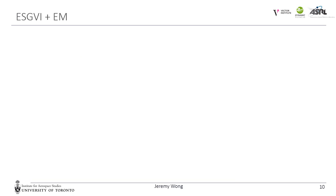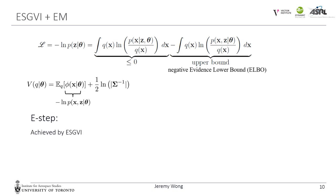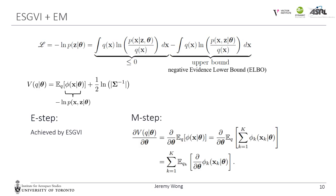Now I will talk about how we can combine ESGVI and EM to do parameter learning. We start by applying the usual EM decomposition to our loss function, where Q is the Gaussian distribution approximating our posterior. The second term is the upper bound, also known as the negative evidence lower bound, or ELBO. In both the E-step and the M-step, we optimize the negative ELBO, which we can rewrite as the following loss functional. This is the same loss we were optimizing in ESGVI. Thus, using ESGVI as our inference engine, we can easily fold in parameter learning with EM, as the E-step is already accomplished by ESGVI. In the M-step, we find parameters that minimize our loss, setting the derivative with respect to parameters equal to zero and directly solving for the best parameters under the current distribution of Q where possible, or using the gradient for a partial M-step.